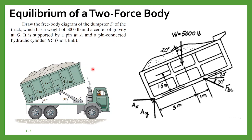Now in this slide we have to draw the free body diagram for this problem: draw the free body diagram of the dumpster D of the truck, which has a weight of 5000 pounds and a center of gravity at G. This dumpster is supported by a pin at A and a pin-connected hydraulic cylinder at BC. So there are two connections — a pin at A and a pin-connected hydraulic cylinder.